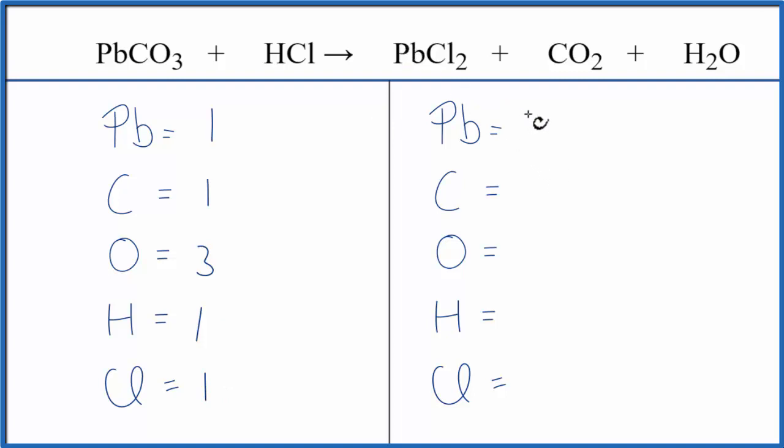On the product side we have one Pb, one carbon, and then oxygen we have two, but be careful we have another one out here. That gives us three, we have two hydrogens, and two chlorines.